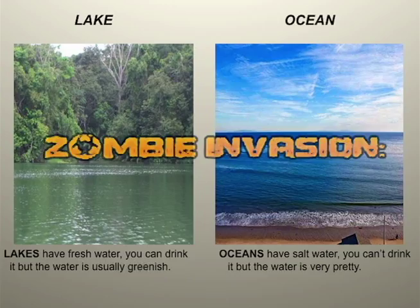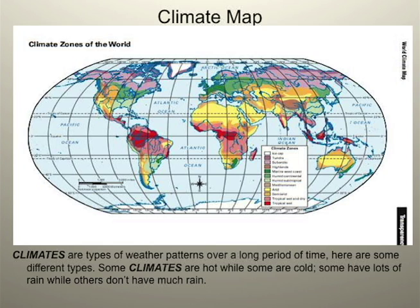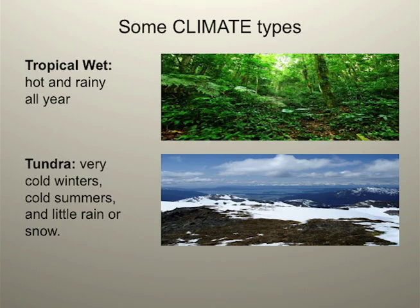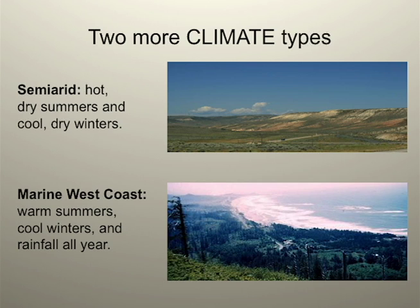This is a climate map. Climate is a type of weather over a long period of time. Some climates are hot, while some are cold. It's up to you to decide the best one for you during a zombie invasion. You can see two types of climates represented in this slide: on the top is hot and wet, and on the bottom is cold and dry. The upper slide is hot and dry, while the lower slide is cool and wet. There are many more types of climates to choose from during a zombie invasion.